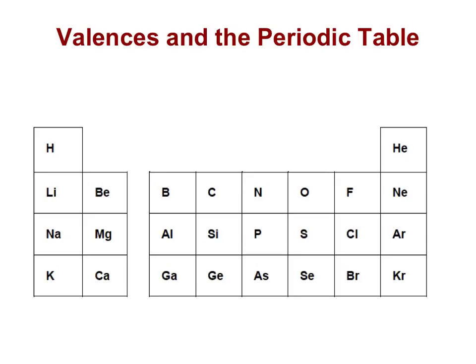Our periodic table is arranged in a way that tells us what the valences are of all of our main groups. If we look at our group one elements, they all have a valence of plus one. Our group two elements have a valence of plus two. Our group three has a valence of plus three.